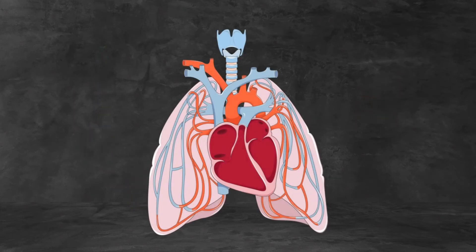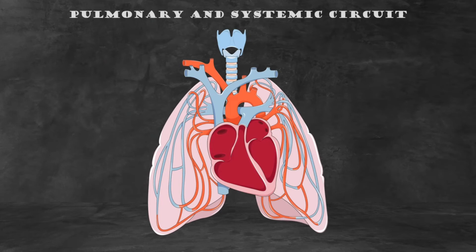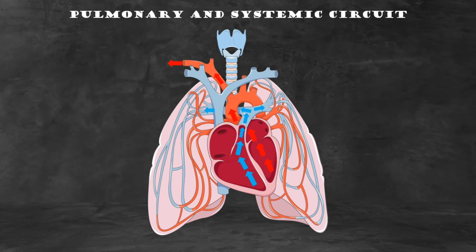The blood vessels of the body are functionally divided into two distinctive circuits: the pulmonary and systemic circuits. Pulmonary circulation transports oxygen-poor blood from the right ventricle to the lungs, where the blood picks up a new oxygen supply, then returns the oxygen-rich blood to the left atrium. Systemic circulation carries oxygenated blood from the left ventricle through the arteries to the capillaries in the tissues of the body. From the tissue capillaries, the deoxygenated blood returns through a system of veins to the right atrium of the heart.